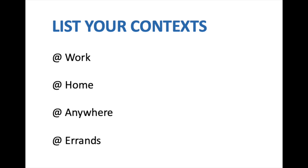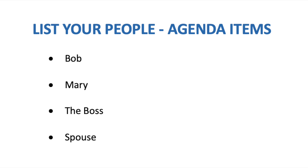As part of your plan, you also want to list your contexts. I've listed at work, at home, at anywhere, at errands. Contexts, of course, is a fundamental part of GTD — it's how you keep track of where you can do your work. You also want to list the people that you relate to — agenda items, if you will, according to GTD. These are the people that I would tend to interact with. I'm going to make sure that I collect items and label them appropriately so that when I meet with Bob, I have a ready list of things to talk to him about.